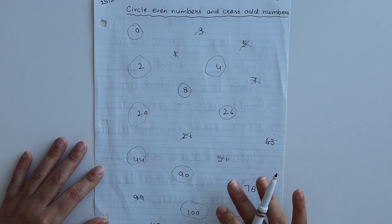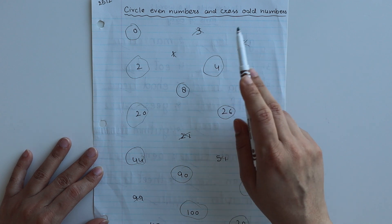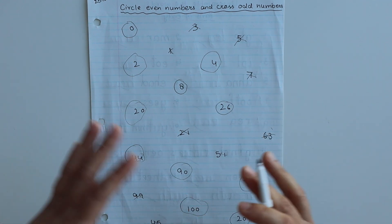The next worksheet is for even and odd numbers. It's simple: circle even numbers and cross odd numbers. I've written randomly some even and odd numbers, so whatever is even gets circled and whatever is odd gets crossed.